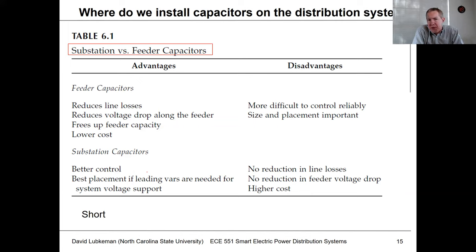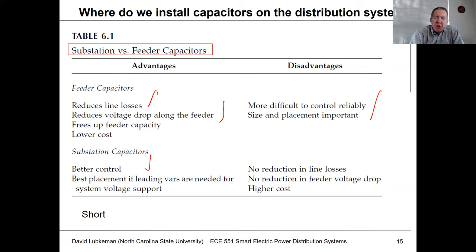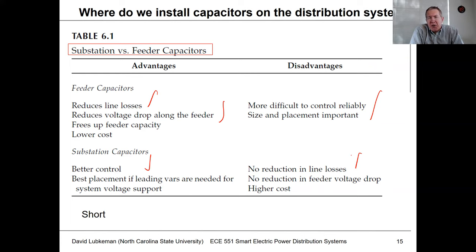As a distribution planner, capacitors can be placed either out in the feeder or at the substation. Placing them in the feeder gives more benefits for loss reduction and feeder voltage improvement, but requires communications to a device in the middle of nowhere. Placing them at the substation offers more convenience for substation automation integration but doesn't provide in-line loss benefits. If all you need is to minimize VARs from transmission, the substation may be the best bet. In practice, utilities use a combination of both.